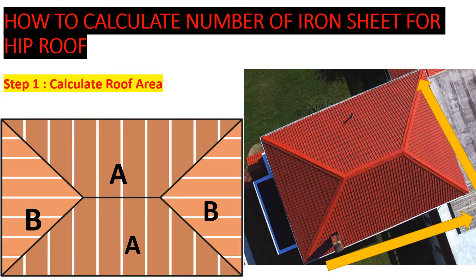This is our plan view of the hip roof. Looking at it from the top view, it's forming a trapezium here and here, and then we have a triangle on this side and a triangle on the other side. We are going to divide it into sections — section AA and section BB — so that we can get the roof area.